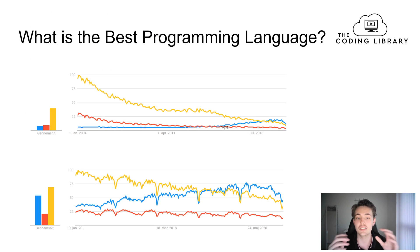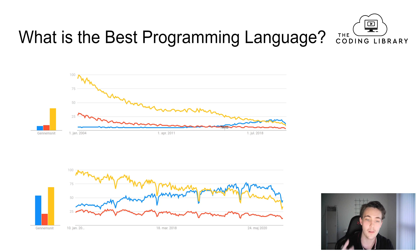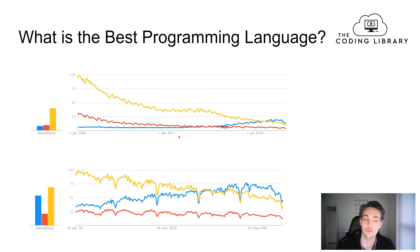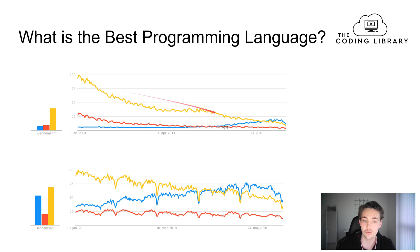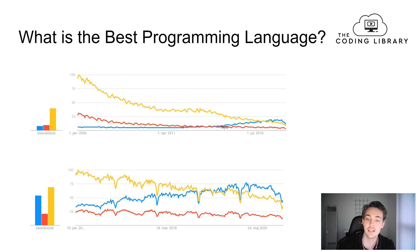First of all, let's see what is the best programming language for the general population based on Google Trends. These are graphs from Google Trends. The first graph shows the last 15 years, where the yellow graph is Java, the red one is C++, and the blue one is Python. We can see that the popularity of Python has been increasing lately, within the last three to four years.